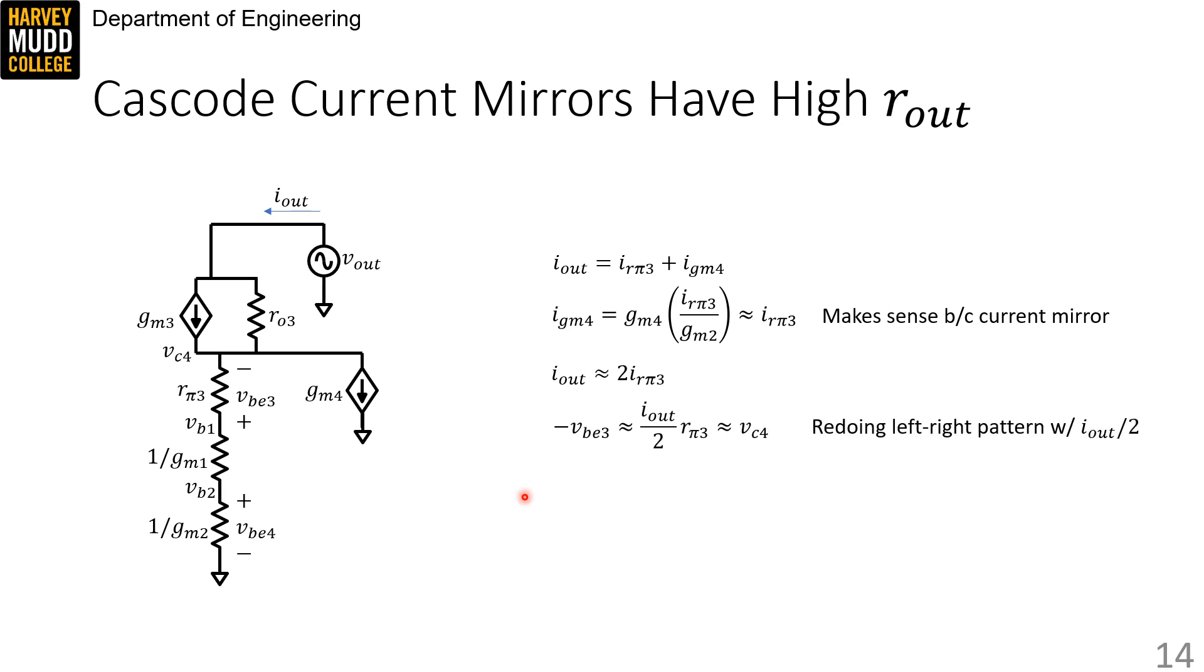Okay. And so this is just another expression of that. That I out is twice I RPi3. The current splits in half as it enters this tail node, VVC4. So after this, we can just redo the usual left-right pattern analysis using a reduced value of I out passing through RPi3.